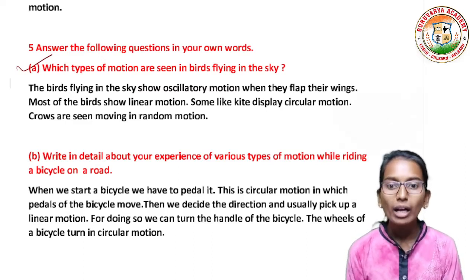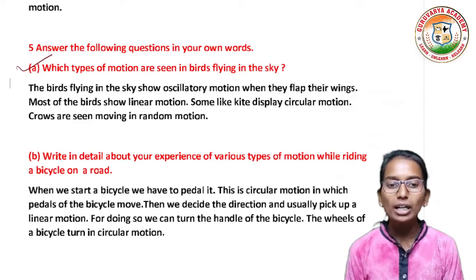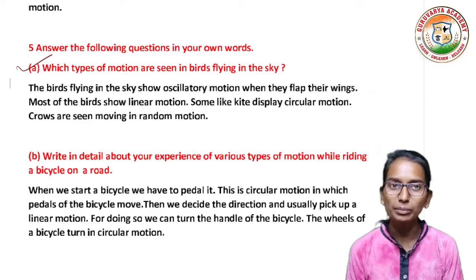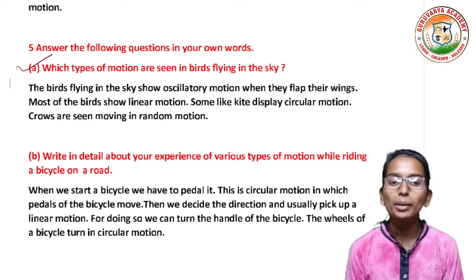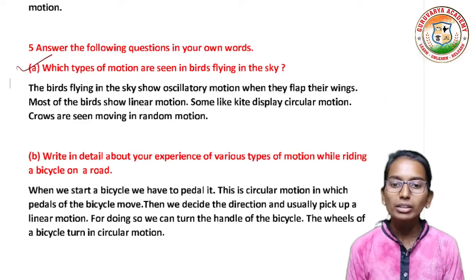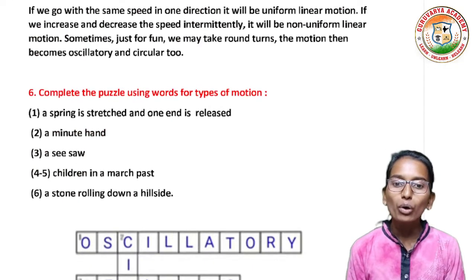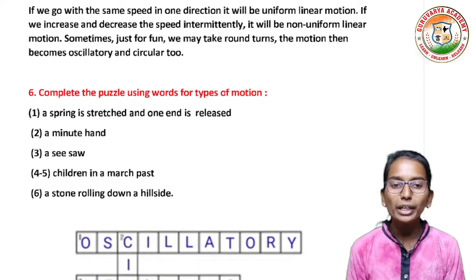When we start a bicycle, we pedal — this is circular motion in which the pedals of the bicycle move. Then we decide a direction and usually pick up a linear motion. For doing so, we can turn the handle of the bicycle. The wheels of a bicycle turn in circular motion.